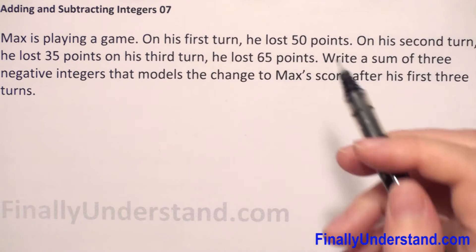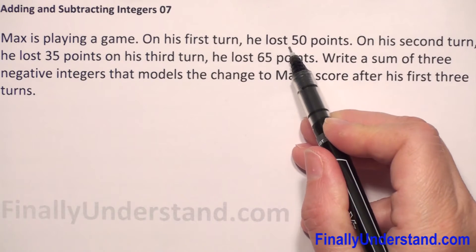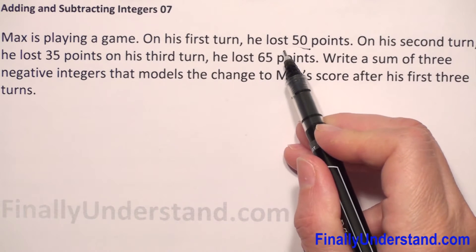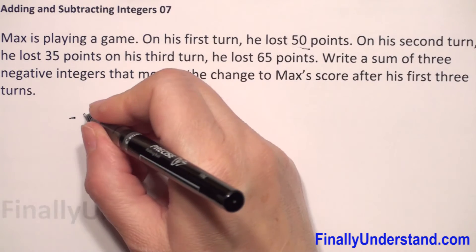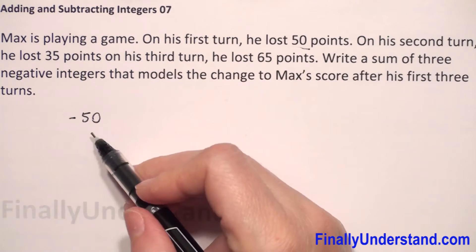So first he lost 50 points. Because he lost, that's why we use negative sign before the number 50. So we have negative 50.